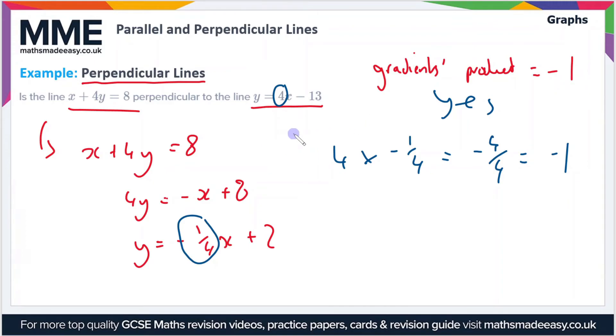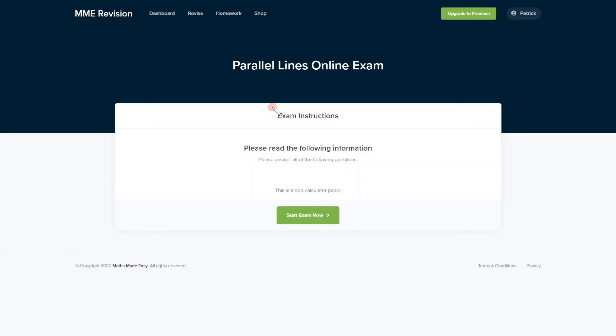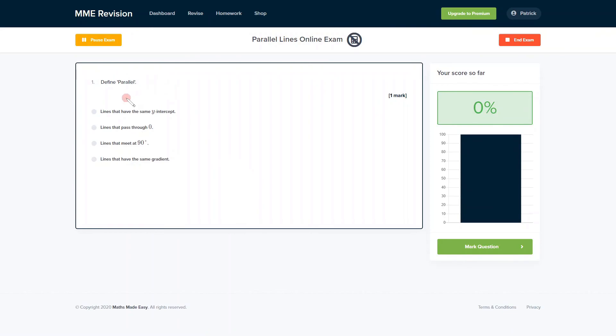So therefore, the lines are perpendicular. If you'd like to get some practice with some parallel and perpendicular line exam style questions, then you can take our online exam now. This is available through our revision platform, and you'll find loads of different questions, a variety of question types, and you get instant feedback on each and every one. So this is useful if you want to keep track of the areas that you need to improve on. If you're interested, then you can click the link below and it will take you straight there.